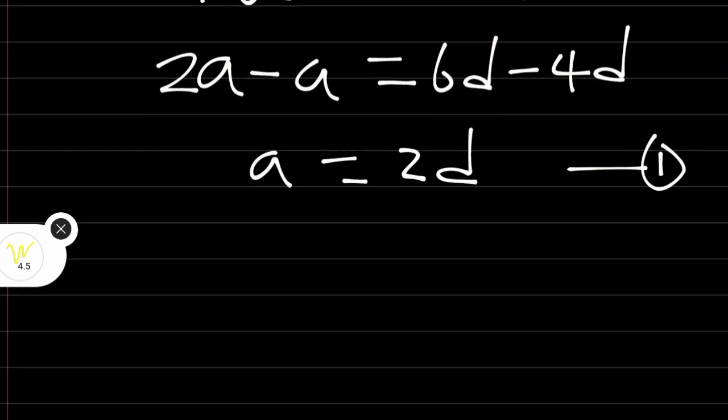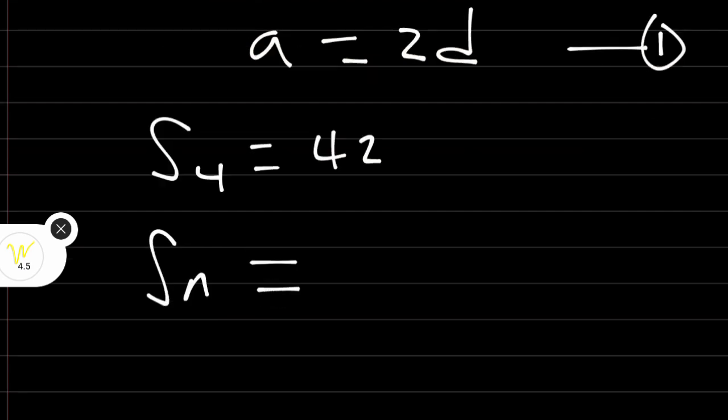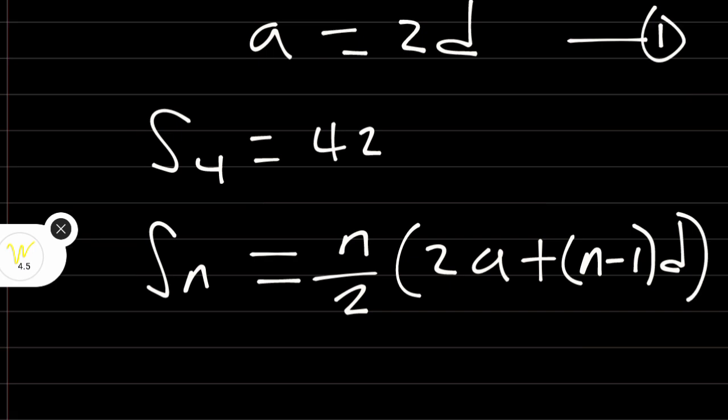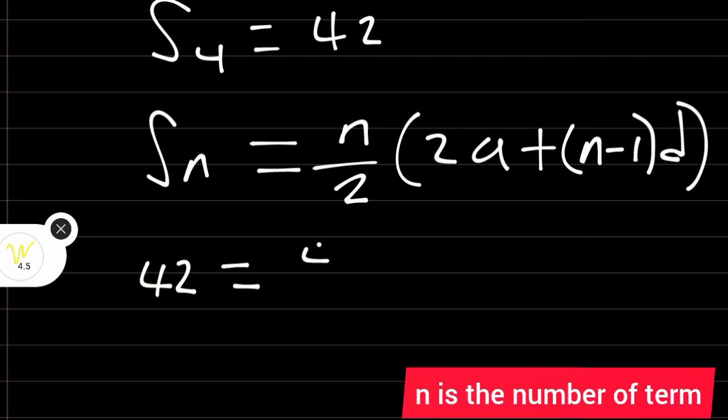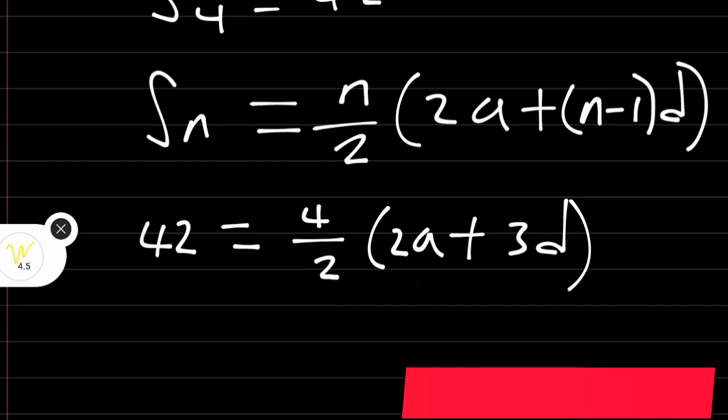And the second part of the question says that the sum of the first four terms is equal to 42. The formula for calculating the sum of an N term of an AP is given by N over 2 into bracket 2A plus N minus 1 into bracket D. So the sum of the first four terms, 42, is equal to 4 over 2 into bracket 2A plus 4 minus 1, that is 3D.